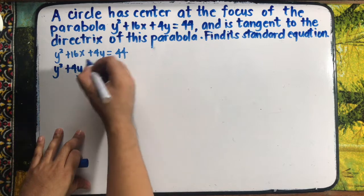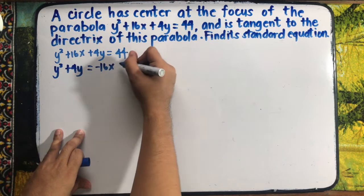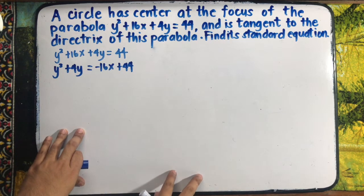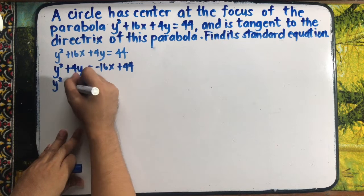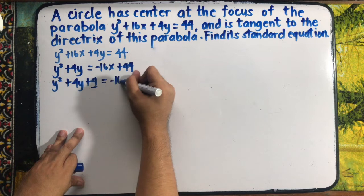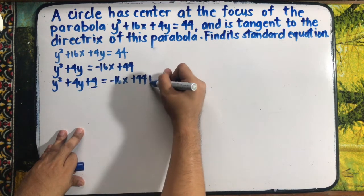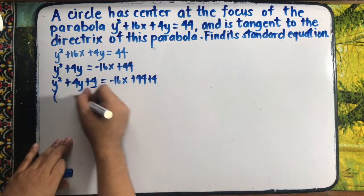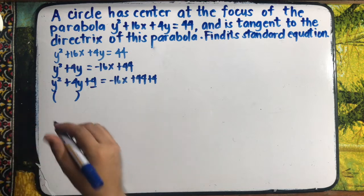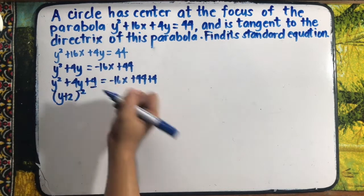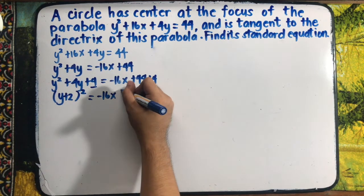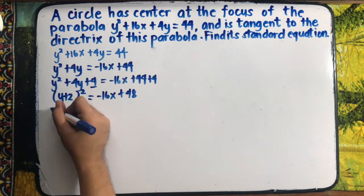Since we have y² + 4y, we transfer 16x to the other side, giving negative 16x + 44. We complete the square: add 4 to both sides, so y² + 4y + 4 = negative 16x + 44 + 4. Factoring the left side gives (y + 2)² = negative 16x + 48.